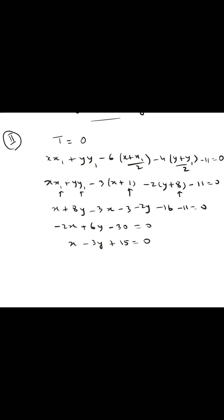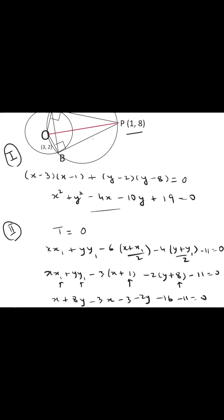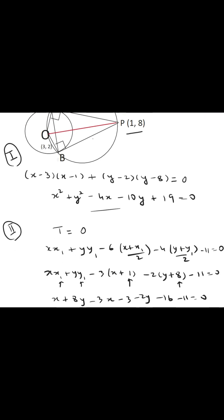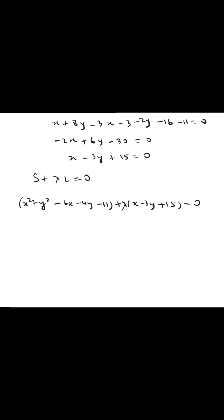Now the equation of the circle which passes through the intersection of our circle and the chord of contact, which is a line, is given as S + λL = 0. S is the equation of the circle that we have. Now this is the equation of all such circles which pass through the intersection of this circle and this line.